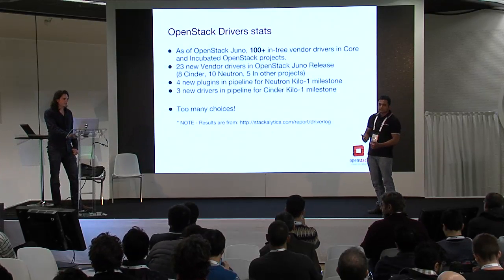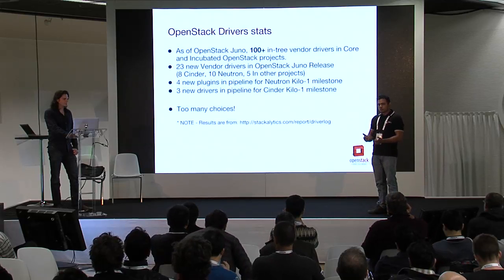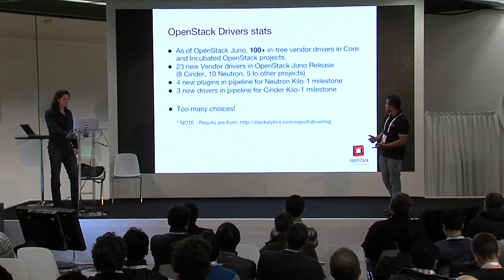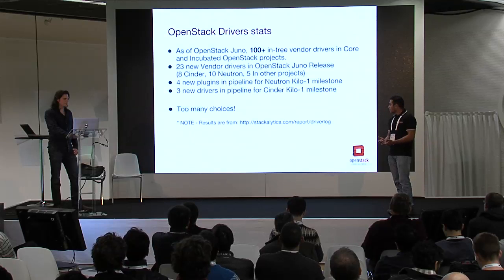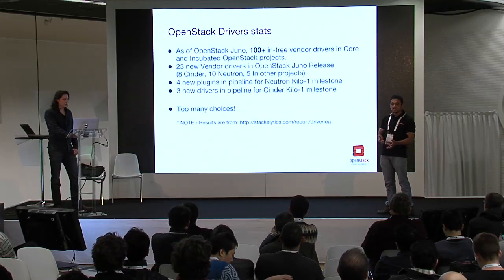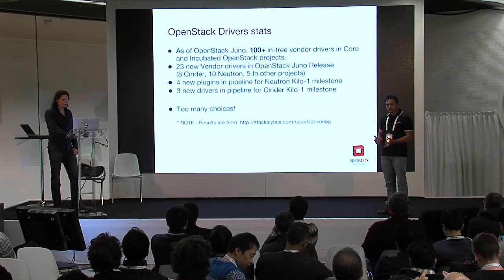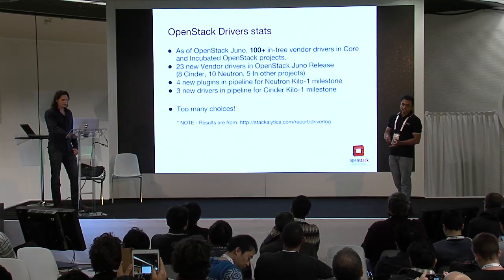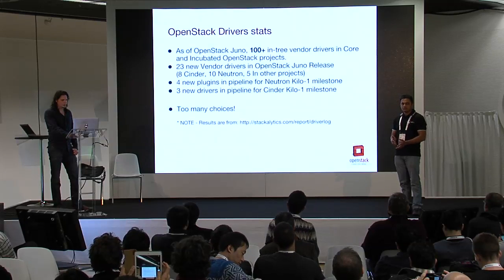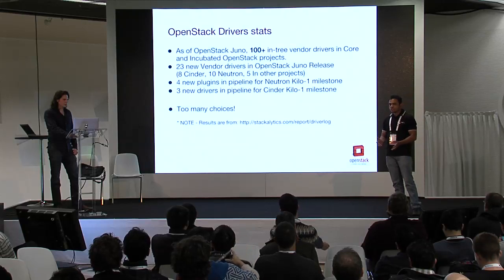Going by the latest cycle reports, the Juno cycle has 100-plus vendors and 100-plus drivers in three projects. There are 23 new vendor drivers coming in the Juno cycle, and already seven new drivers have been planned for the Kilo cycle. There are too many choices.